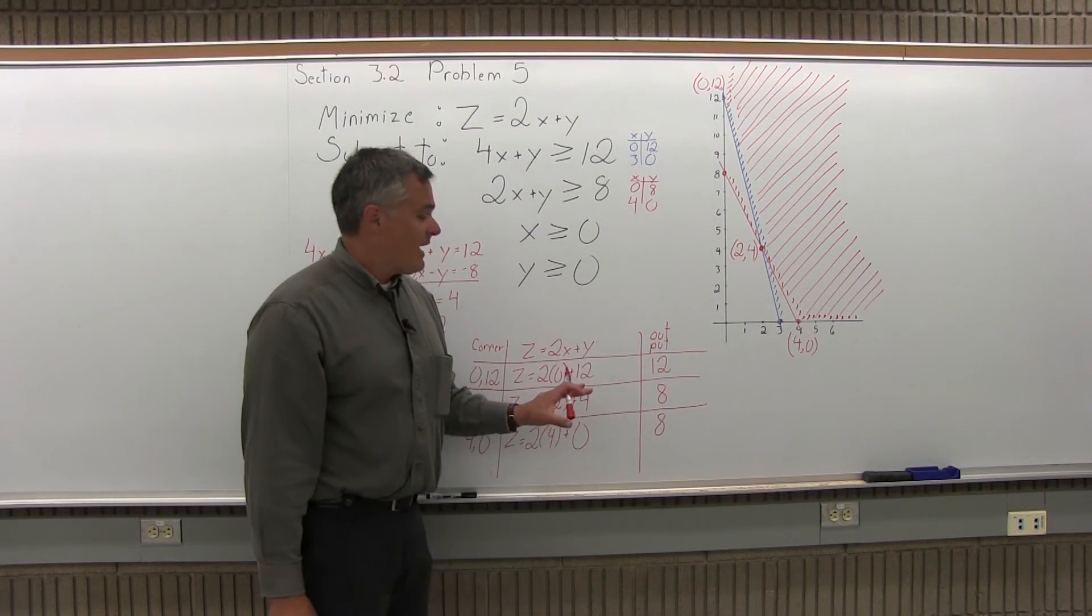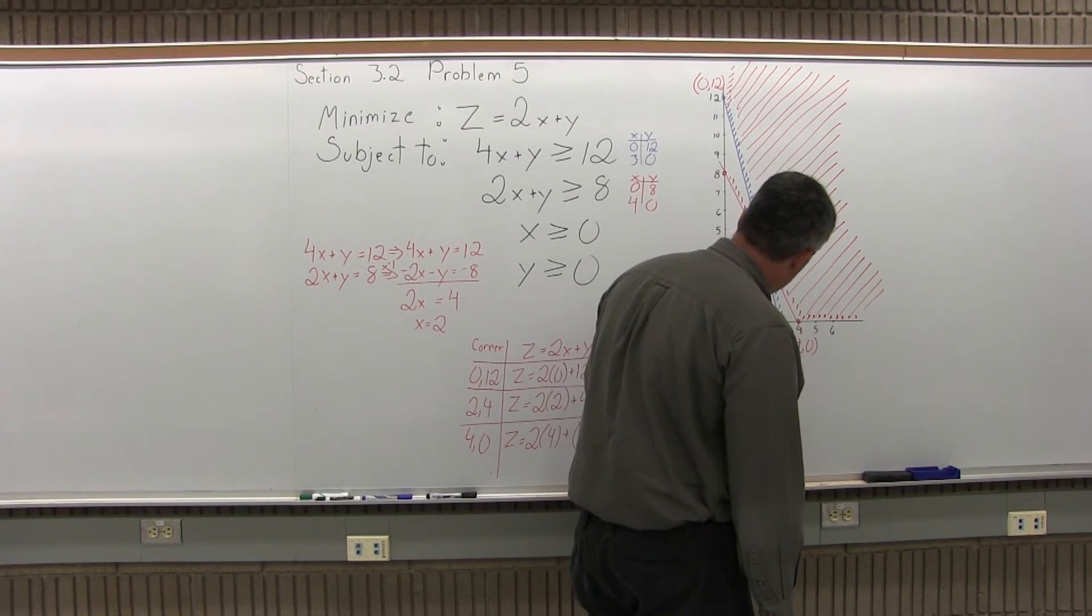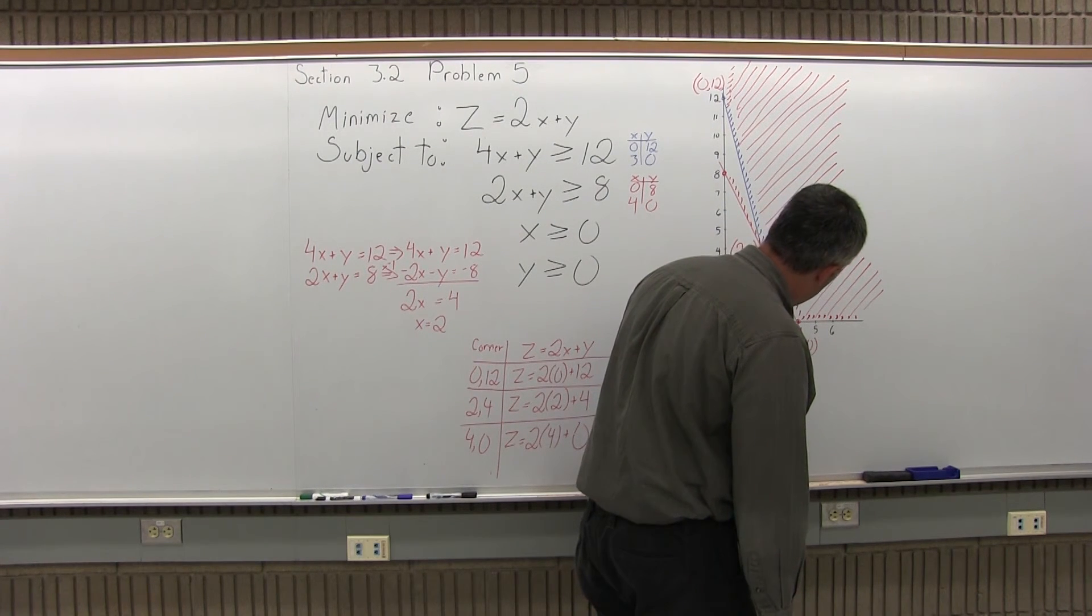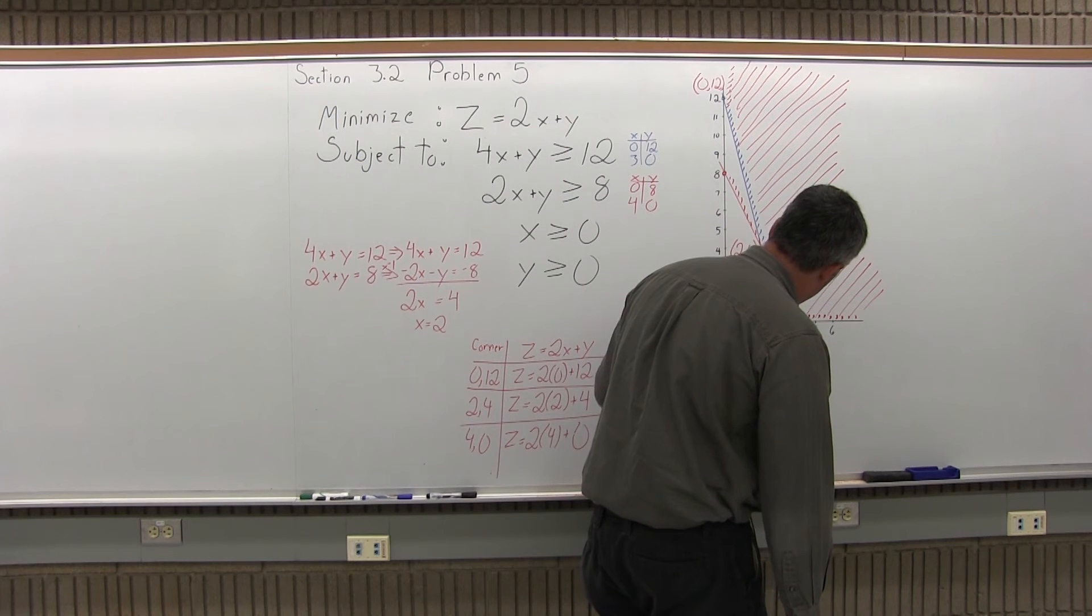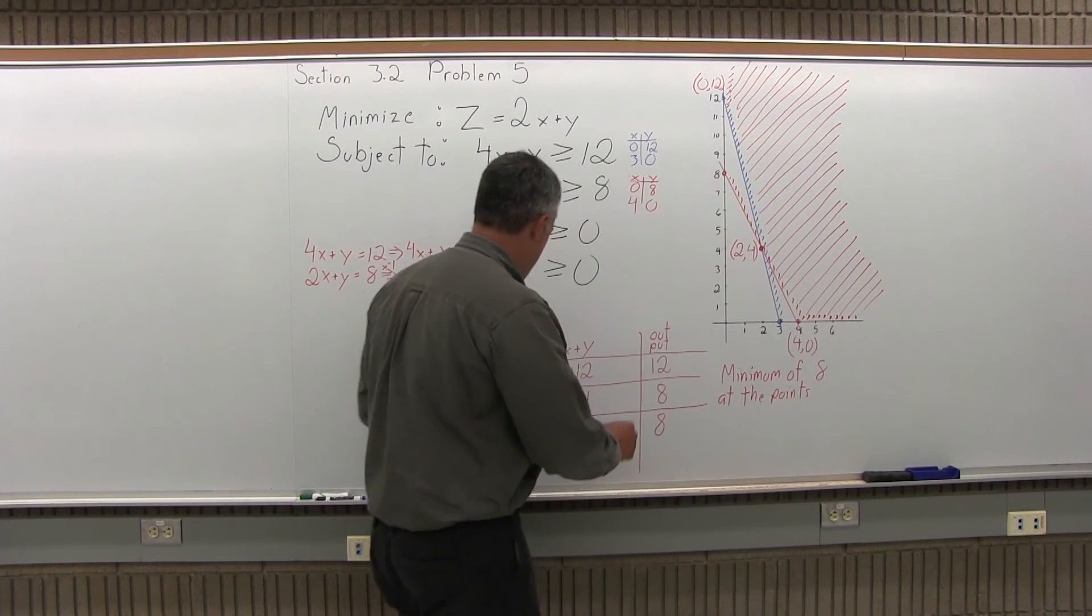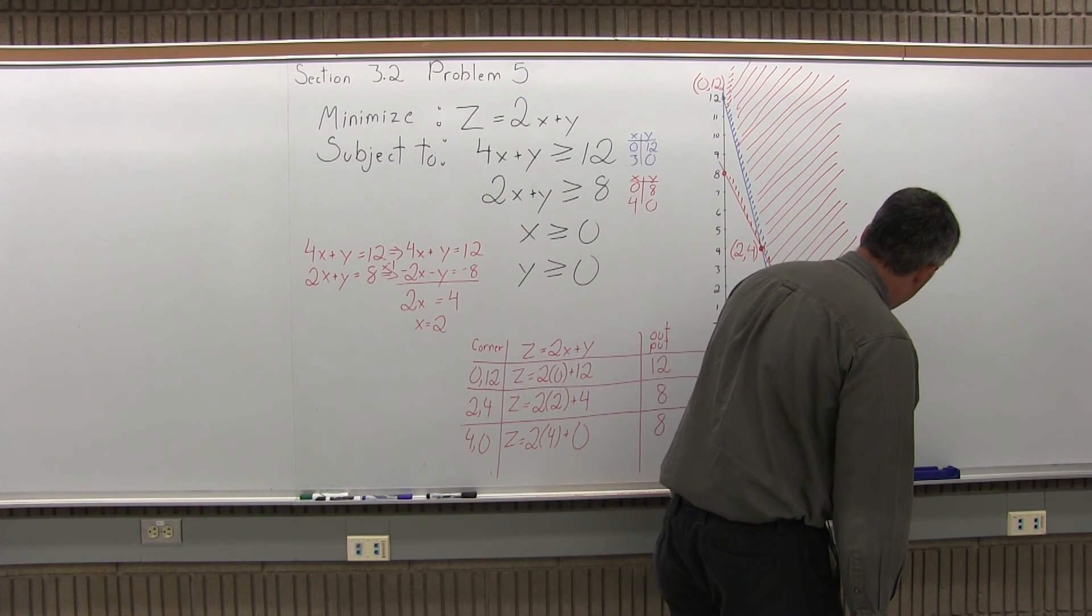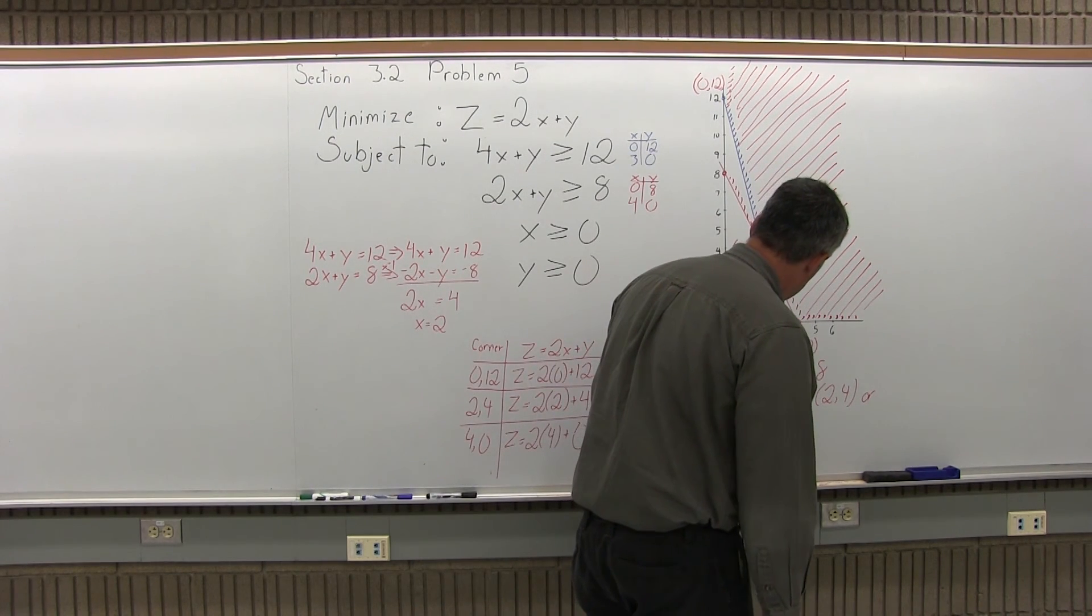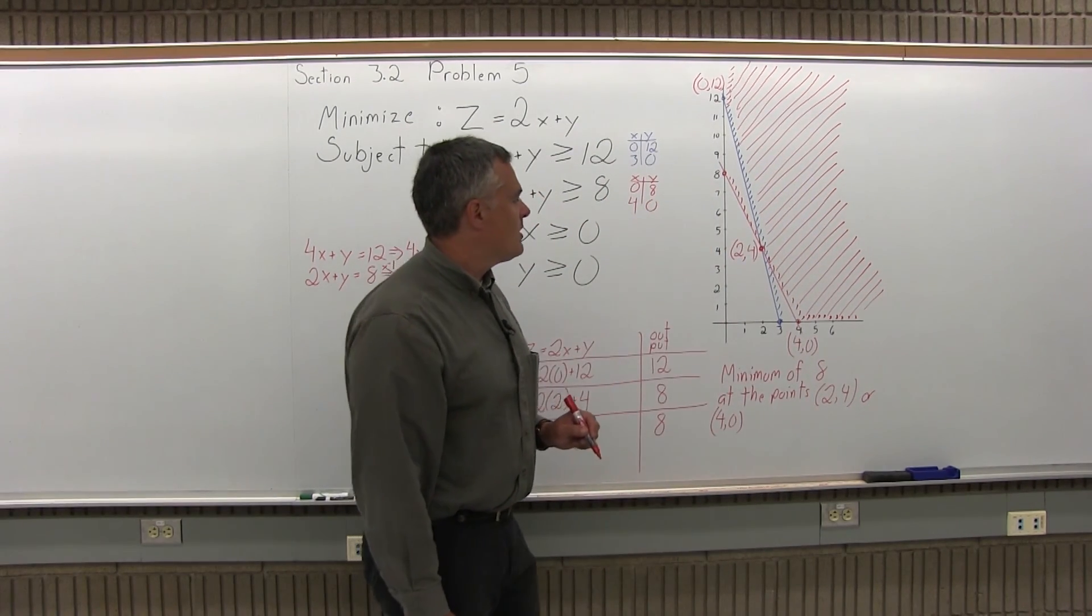So the last step of the 4 steps is state your solution. The solution is going to be minimum of 8 at the point. Now usually I write at the point. But in this case I have to write at the points because there's more than 1. That 8 can come from 2, 4 or also 4, 0. So a minimum of 8 at the points 2, 4 or 4, 0.